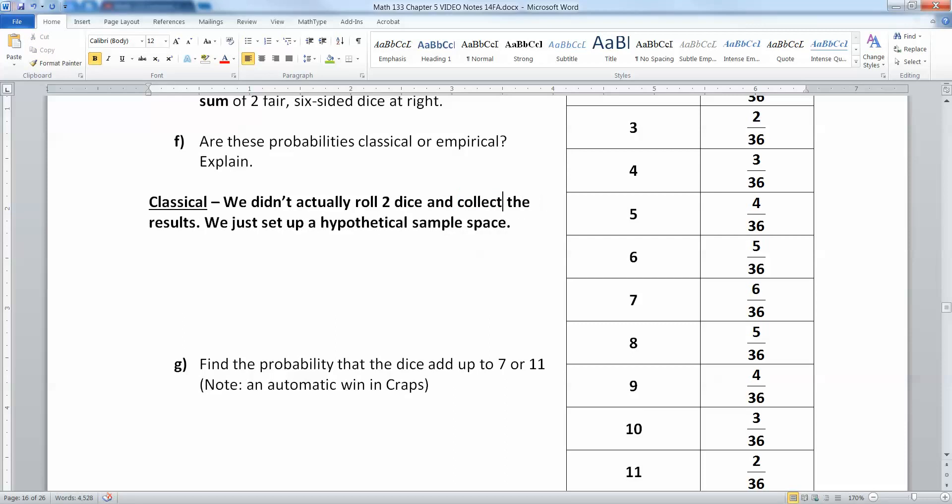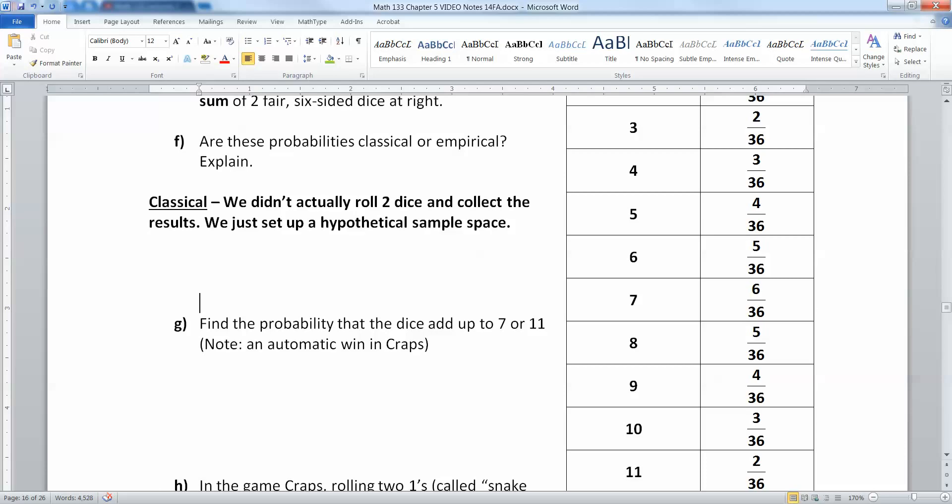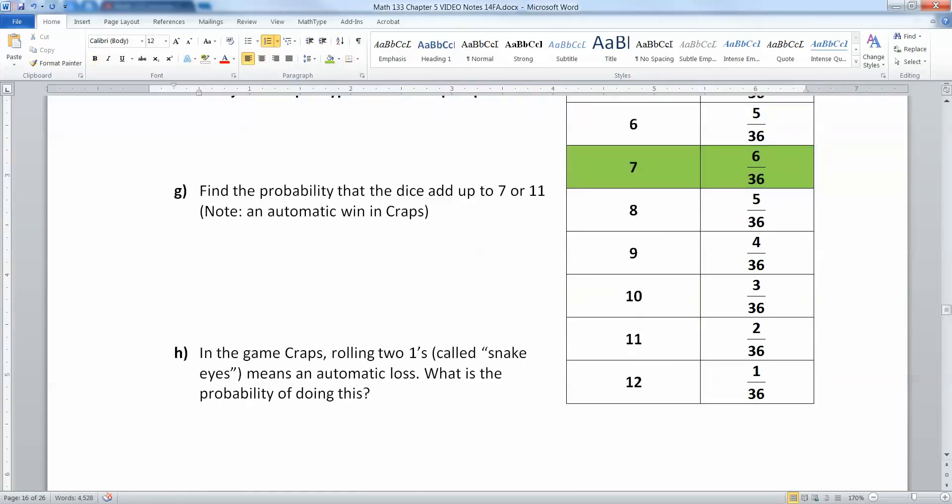Now, find the probability that the dice add up to seven or 11. That's an automatic win if ever you're playing craps. So seven is right here and 11 is down here, right there. So probability of seven or 11 is those two green ones.